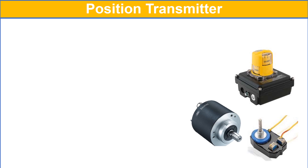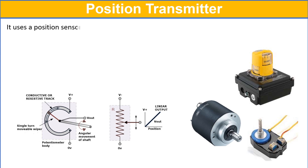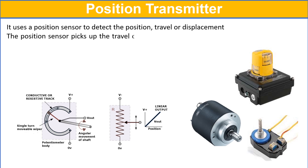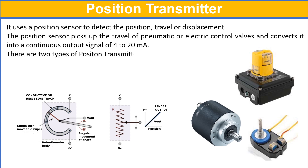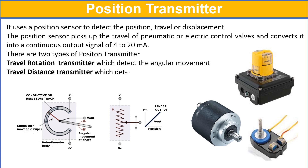The position transmitter uses a position sensor to detect position, travel, or displacement. The position sensor picks up the travel of a pneumatic or electric control valve and converts it into a continuous output signal of 4 to 20 milliampere. There are two types of position transmitter: travel rotation transmitter and travel distance transmitter. The travel rotation transmitter detects angular movement, while the travel distance transmitter detects linear movement.